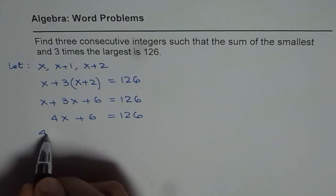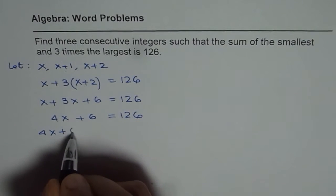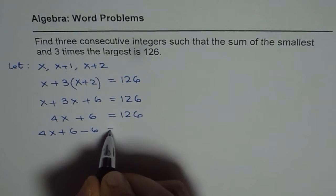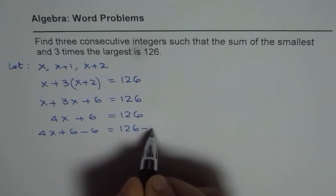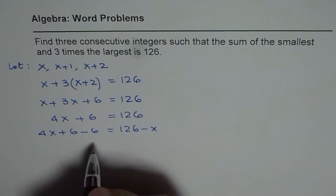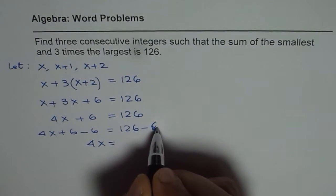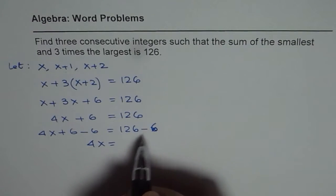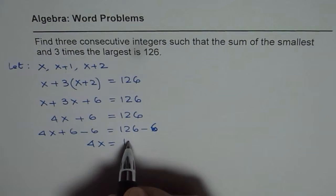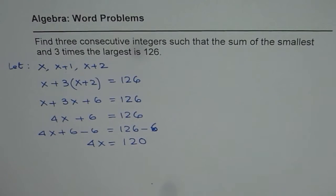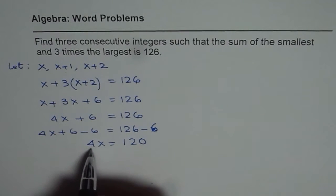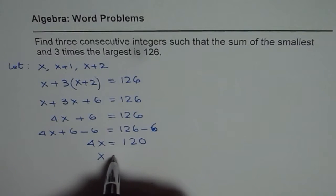Some students will be writing like this: 4x plus 6 minus 6 equals 126 minus 6. Some students will directly write 4x equals 126 minus 6 and then solve. Let me do these two steps together: 120. Now we can divide by 4 each side.